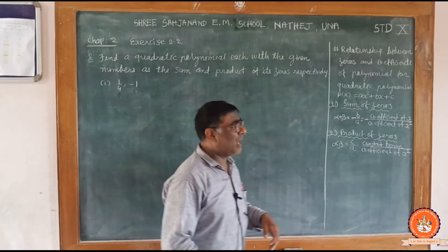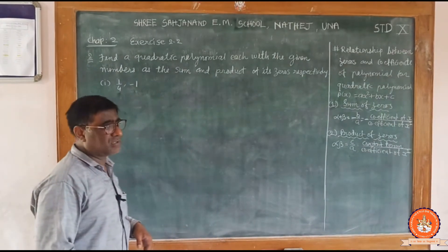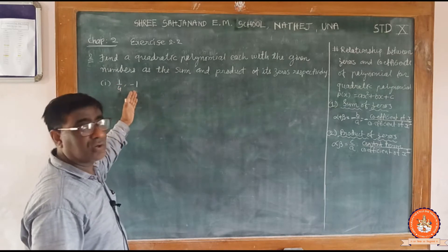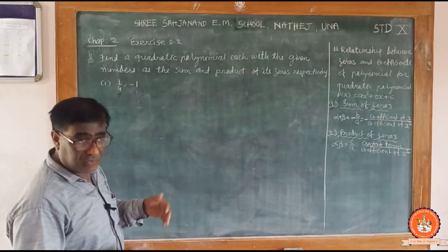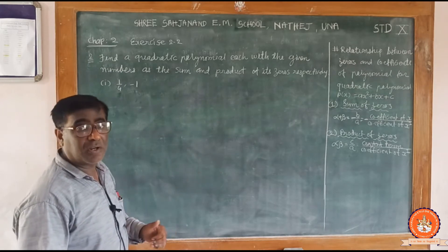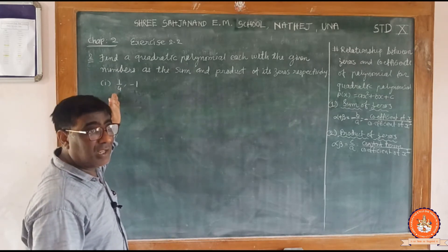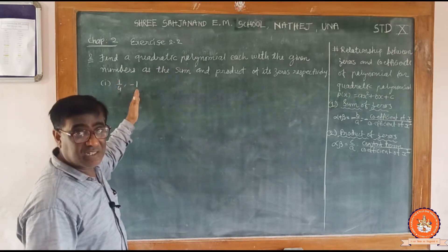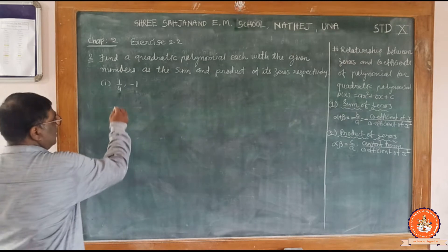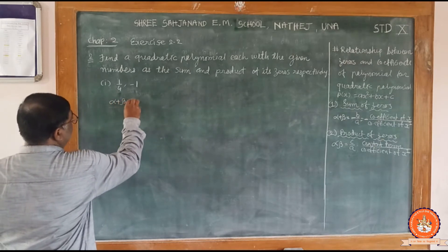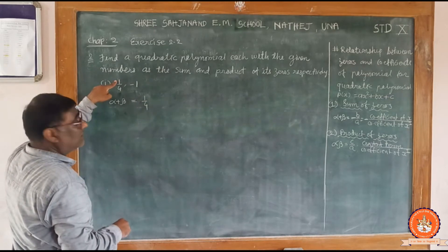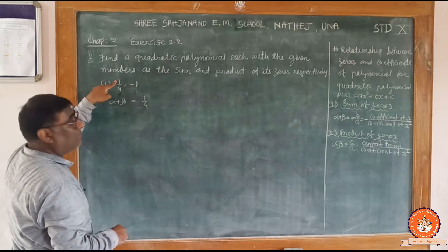But here we have to go through the reverse process. The given numbers are sum of zeros and product of zeros, and we have to find that particular quadratic polynomial whose sum of zeros is 1 by 4 and the product of zeros is minus 1. So alpha plus beta is equal to 1 by 4.